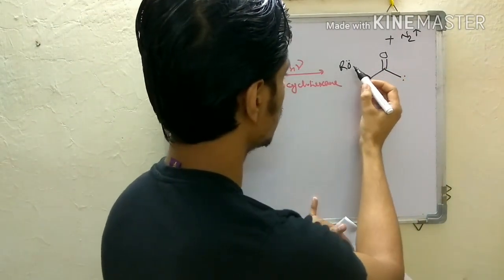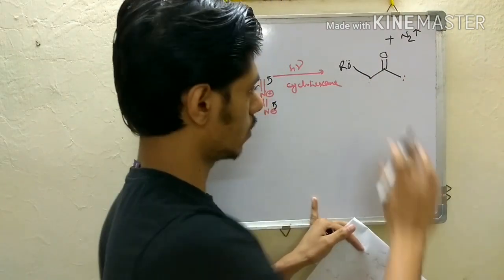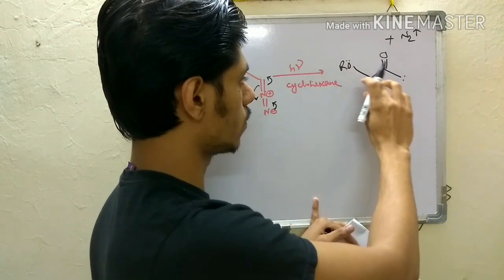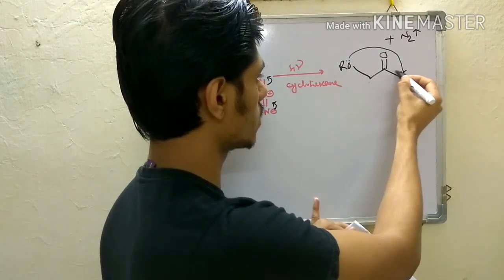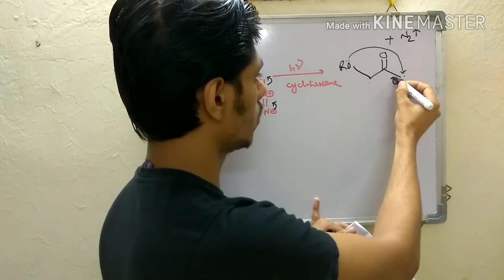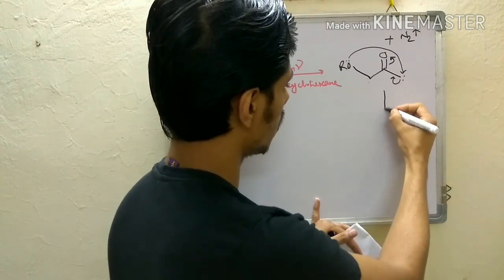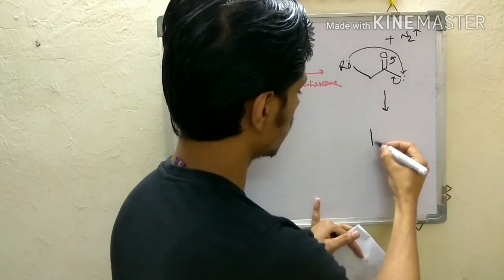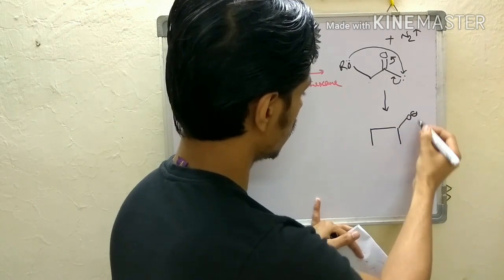But you see this is one, two, three, four - this is only four atom distance. If it does a neighboring group participation it will be a four-membered ring and to stabilize this negative charge there will be a double bond.